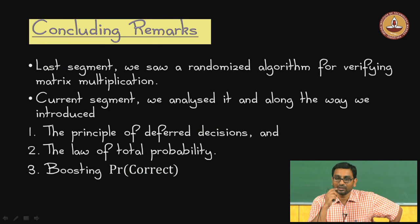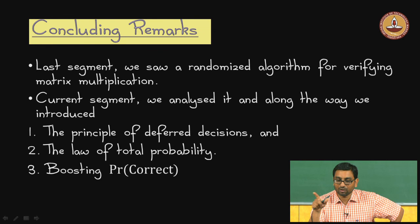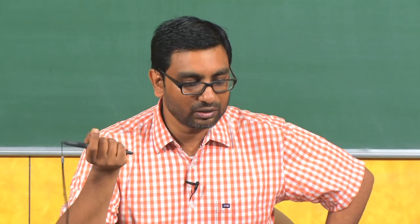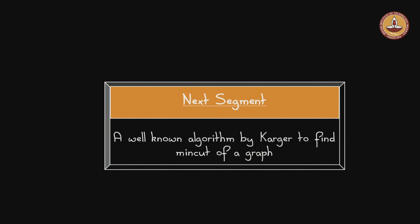We are down to the concluding slide. In the previous segment we saw the algorithm to verify matrix multiplication. What we have done today is carefully go through the analysis of this algorithm: we studied the principle of deferred decisions, the law of total probability, and showed that the algorithm is correct with high probability. With that, let us look forward to the next segment - it is going to be another exciting algorithm called Karger's min cut algorithm.